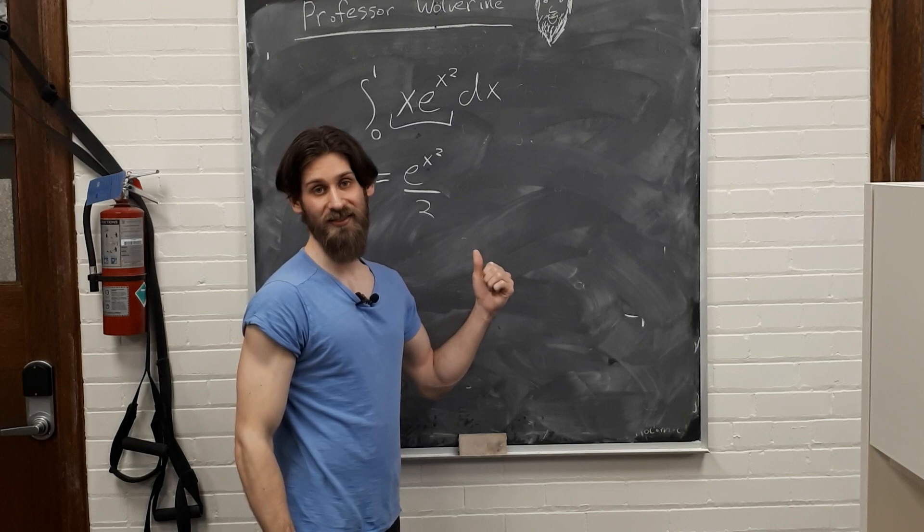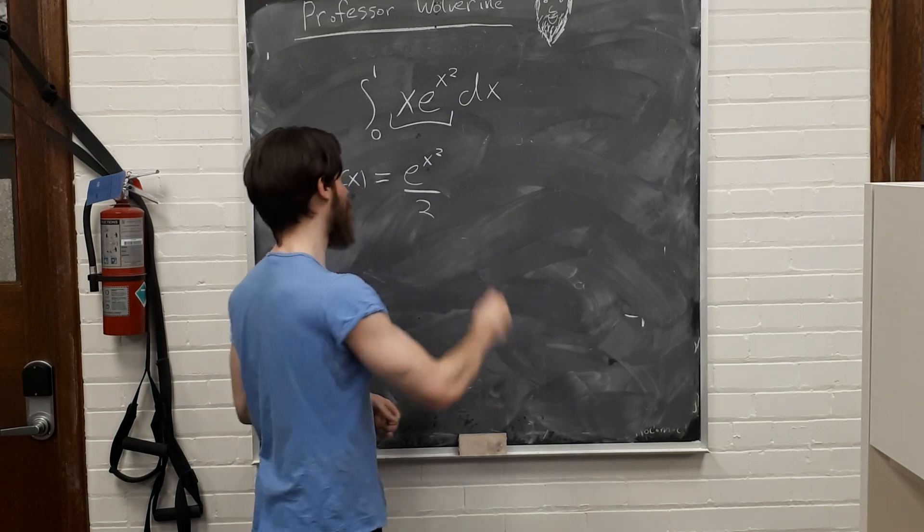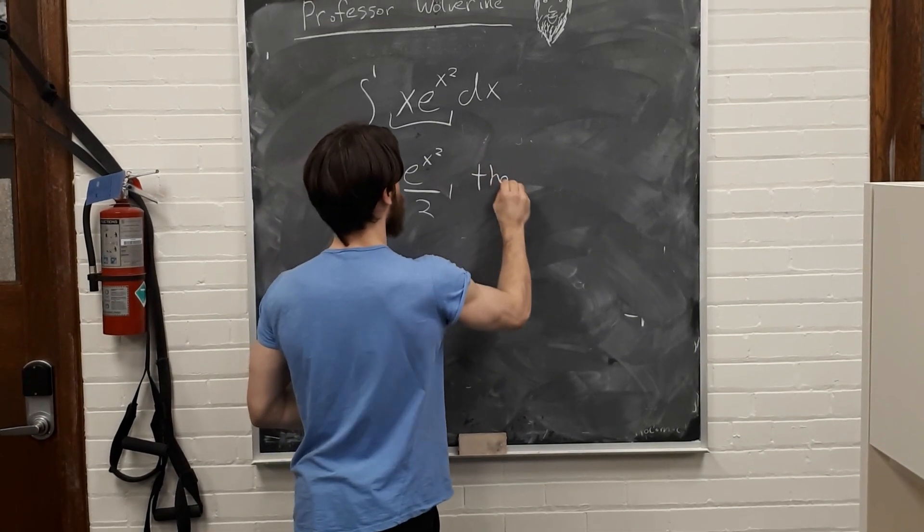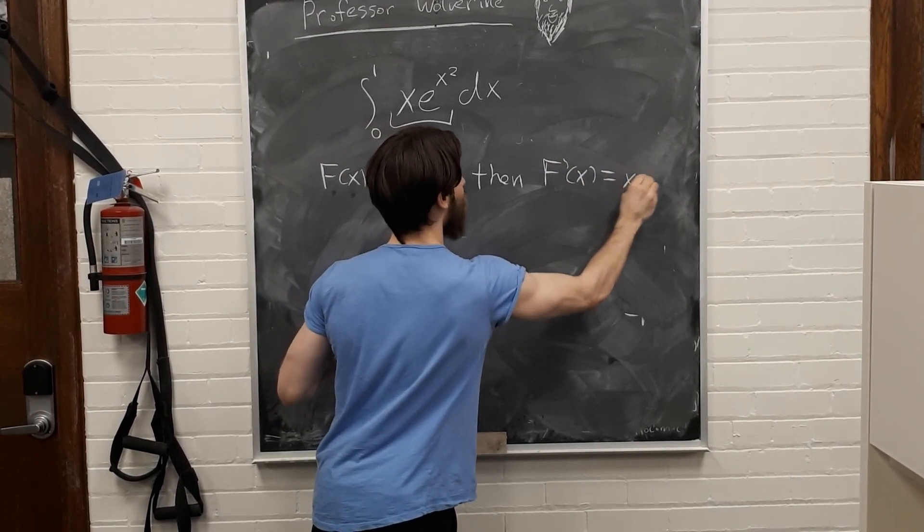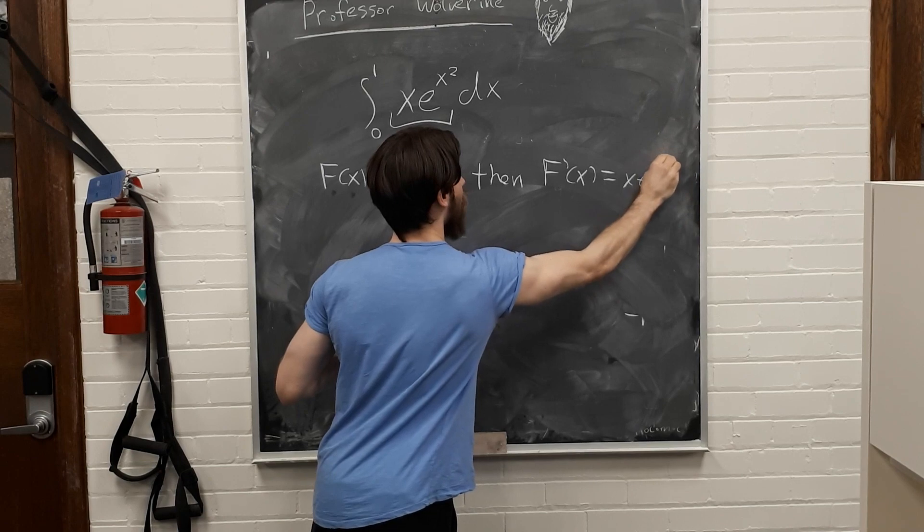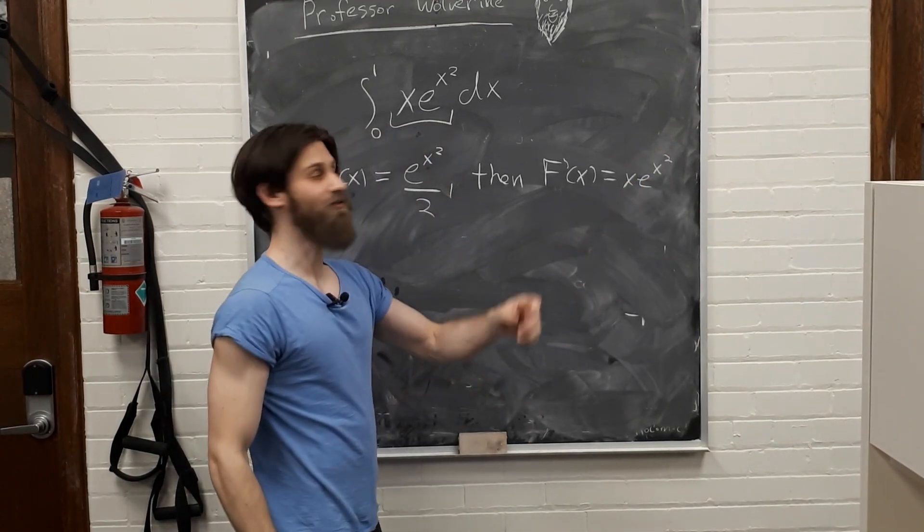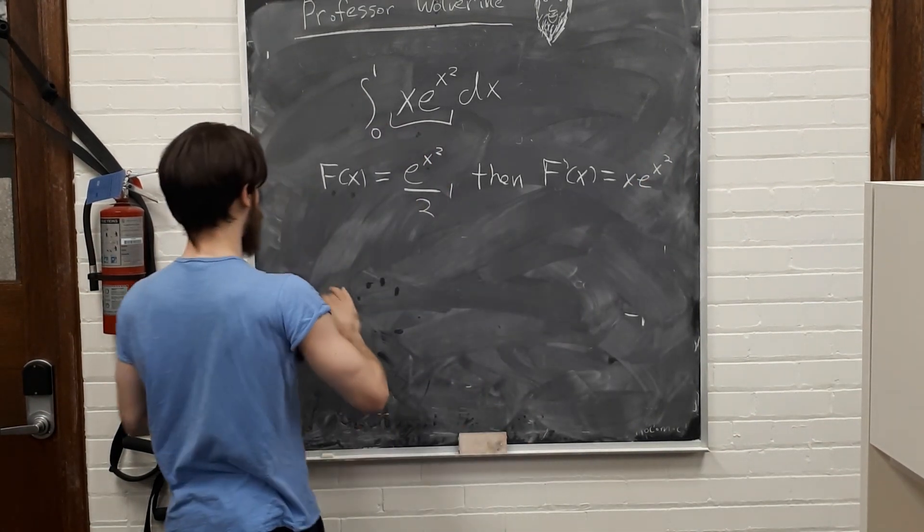All right? Then if we differentiate this, you know, chain rule, all that good stuff. Then, F prime of x is equal to x e to the x squared. All right?